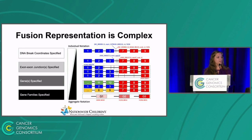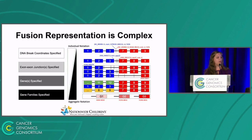Gene fusion representation can be pretty complex. As we can see illustrated in this diagram, towards the top, we can describe gene fusions as granularly as specifying DNA break coordinates. And if you look towards the bottom of this chart, you can see that we can describe gene fusions as broadly as specifying the gene families. And additionally, there are so many nuances in between these for representing gene fusions.